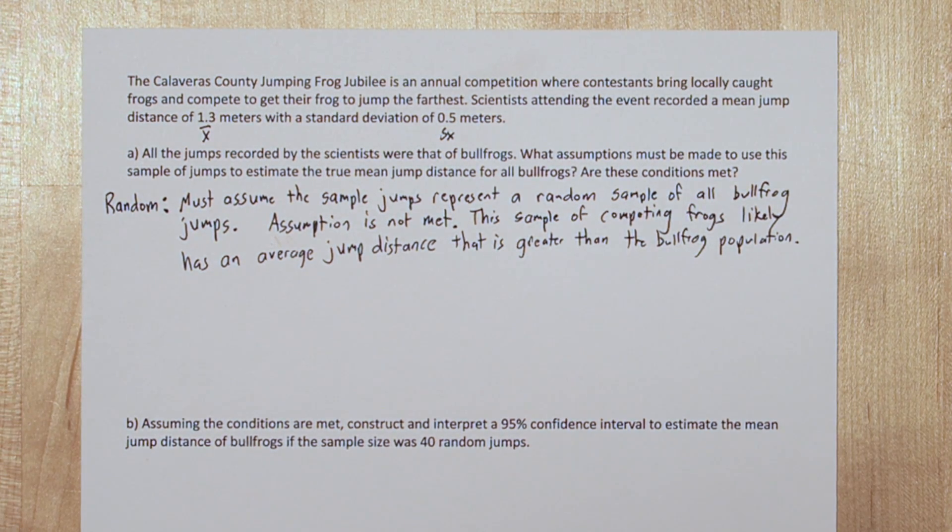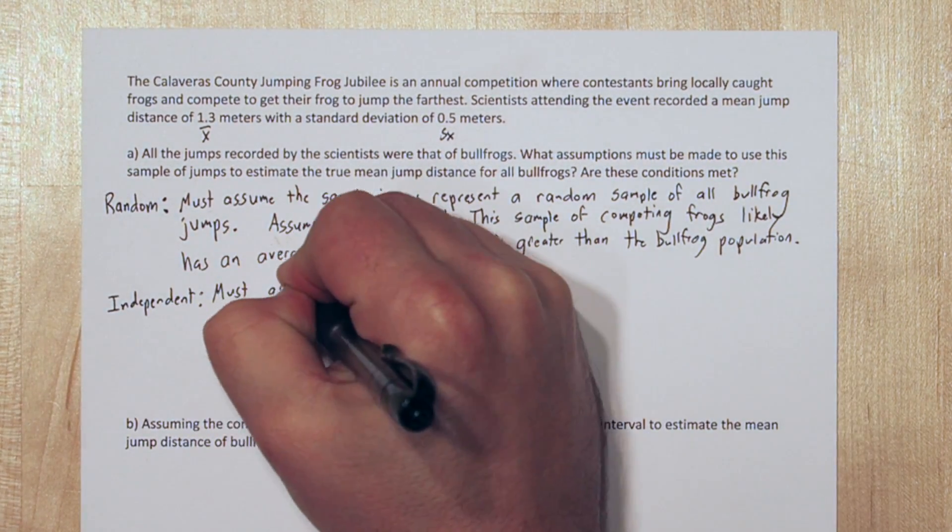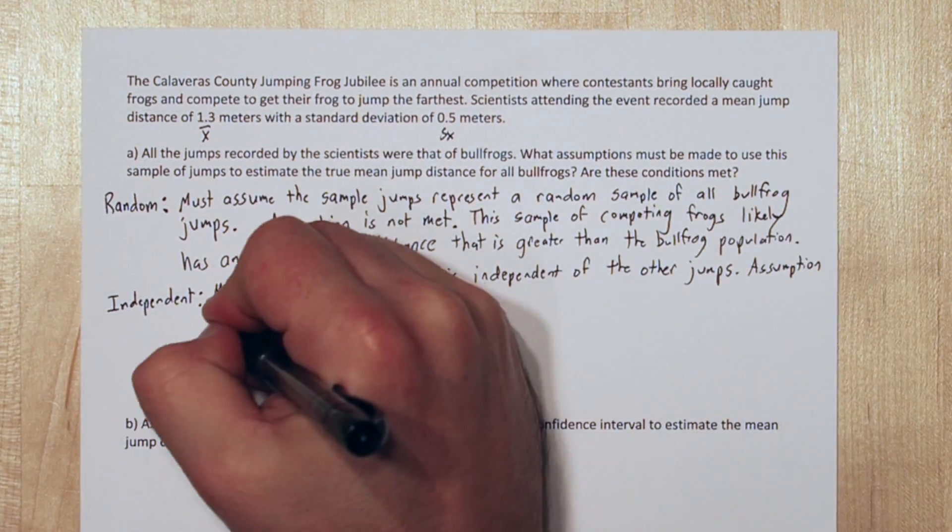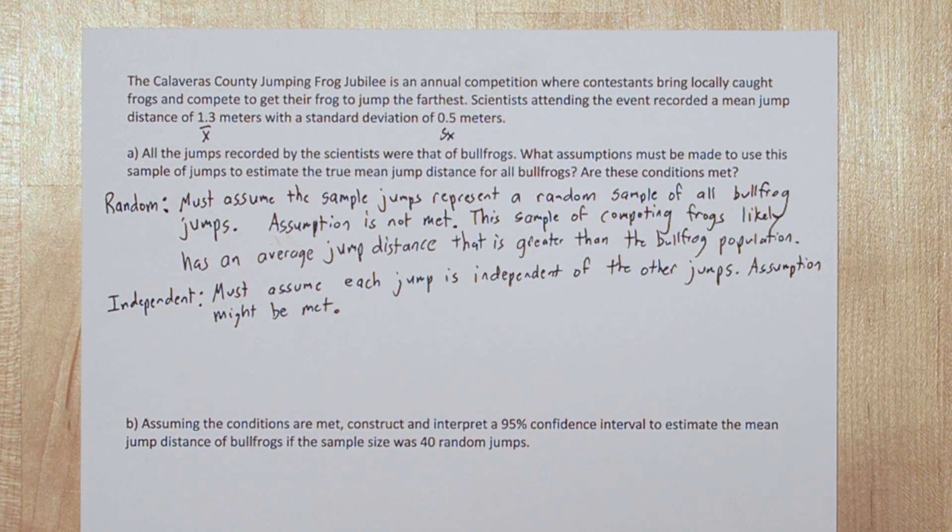The next condition is the independent condition. We must assume that each jump is independent of the other jumps. This assumption might be met, but we really don't have any information about whether one jump is affecting the distances of the other jumps.